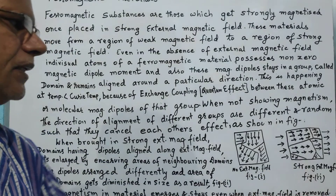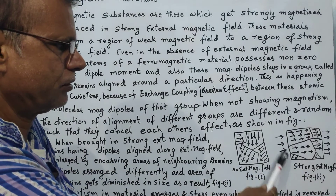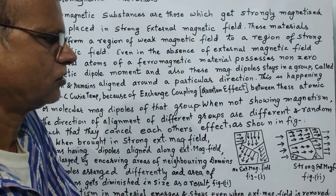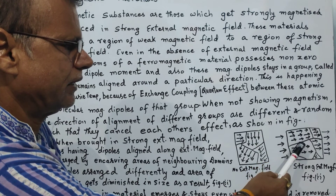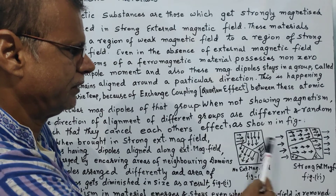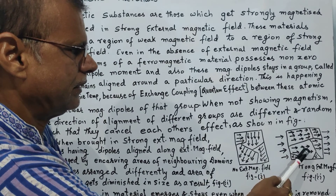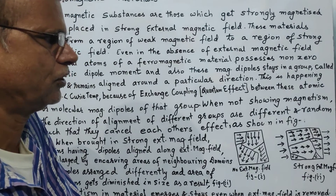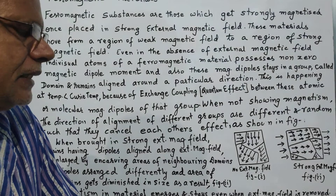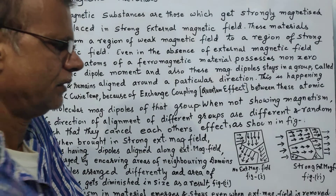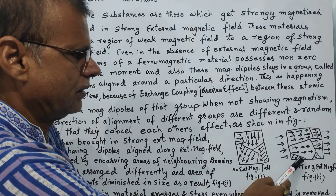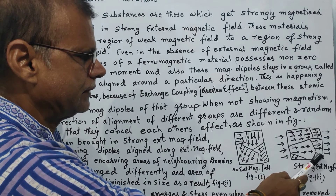That is shown in figure 2. Here you see we have a strong external magnetic field shown by these parallel lines outside the magnet. The domains which were aligned along the direction of the external magnetic field grew in size by encroaching on the area of neighboring domains. Other domains were forced to change their direction or reduce their area, and those not aligned along the external magnetic field had their size reduced.